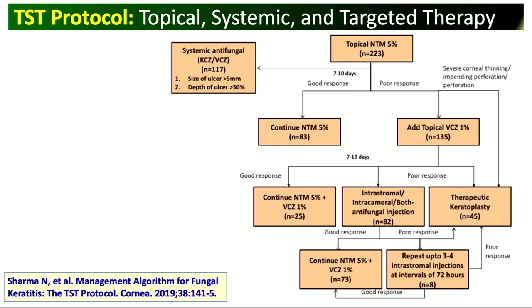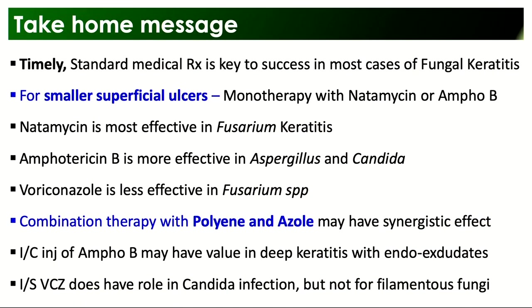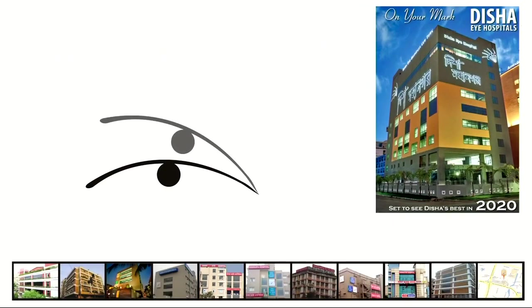The algorithm for fungal keratitis management starts with topical natamycin alone, with systemic antifungal added for ulcers more than 5 mm with depth more than 50%. On good response, continue treatment. On poor response, proceed to intrastromal therapy or combination natamycin plus voriconazole. If still poor response, repeat intrastromal injection. The ultimate option remains therapeutic keratoplasty. Take-home message: timely standard medical therapy is the key. Natamycin is the drug of choice for fusarium; amphotericin B for aspergillus and candida; intrastromal voriconazole has a role in candida but not in filamentous fungi.